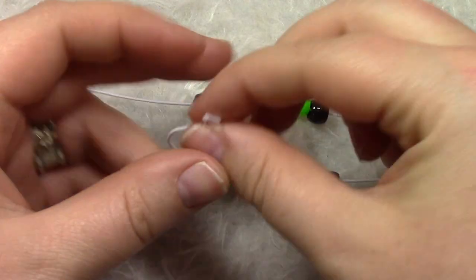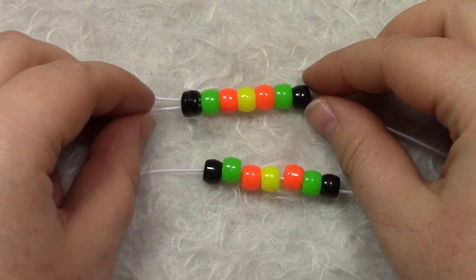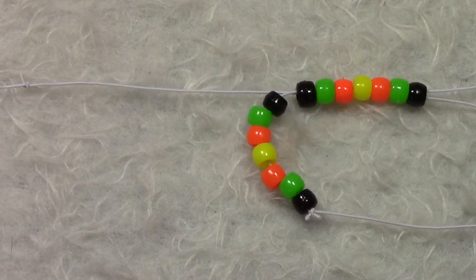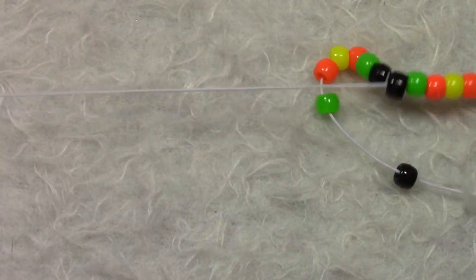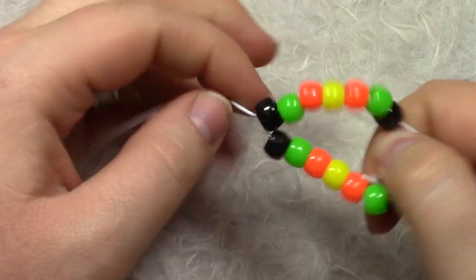So we're going to take the opposite string and we're going to string through all seven beads and create that ladder stitch. You're going to make this exactly how you would a normal plain ladder cuff, nothing special about it, all exactly the same.